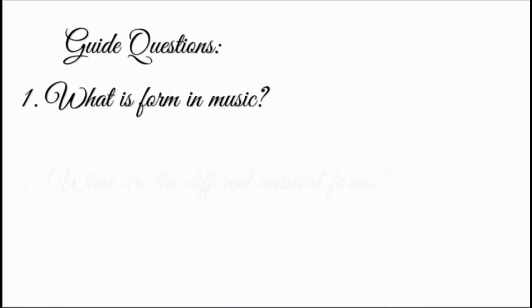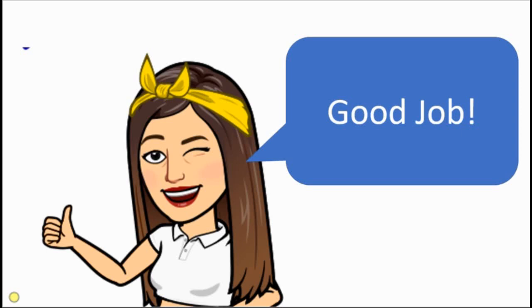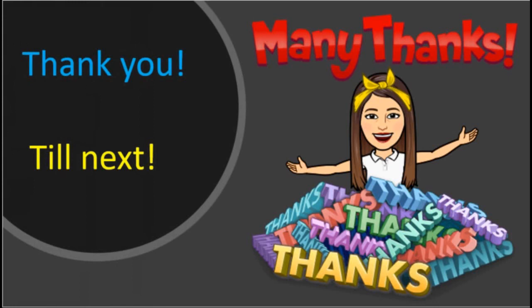What is form in music? And what are the different musical forms? Good job! Form is the way a musical composition is arranged. The different musical forms are unitary form or strophic form, binary form, ternary form, and rondo form. Good job, Grade 6. I hope you learned a lot today. Thank you for listening. Till next time. Have a nice day. God bless!